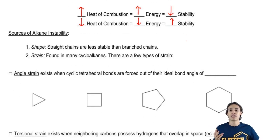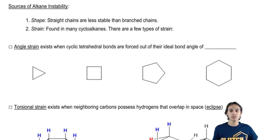So now there's actually two different ways that alkanes can become unstable. The first one and probably the most difficult to explain is the shape. There's just this rule in organic chemistry that a straight chain is going to be less stable than a branch chain.